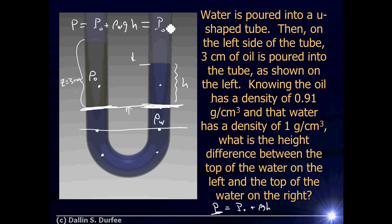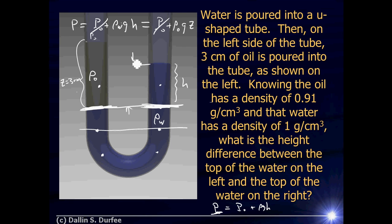The pressure at the interface on the left is p-naught plus rho-oil·g·z. This has to equal the pressure on the right: p-naught plus rho-water·g·h. Setting them equal, I can cancel the p-naughts from each side, then cancel the g's. I'm left with: density-of-water times h equals density-of-oil times z. Solving for h: h equals z times the density of oil over the density of water.